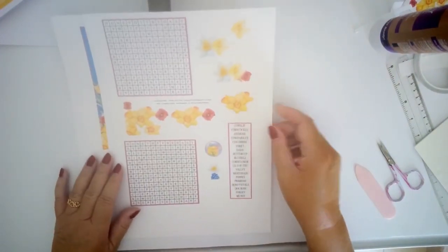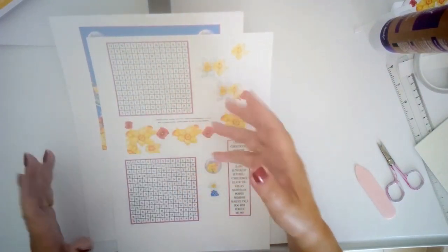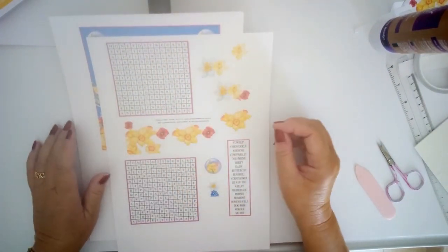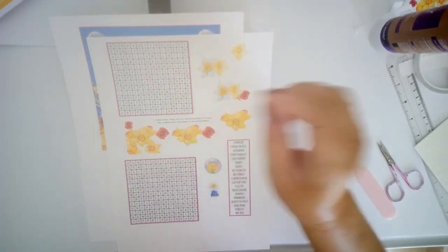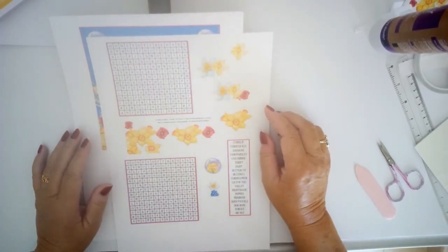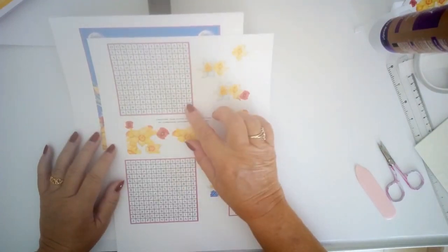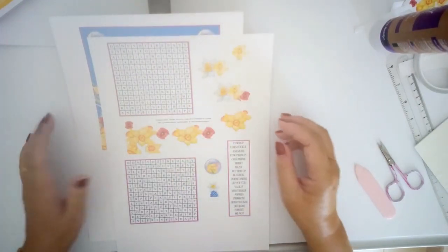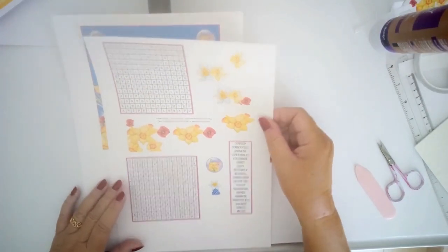Inside on the second page we've got another copy of the word search because of course people don't want to spoil the front of their card by crossing through the flowers so this is the copy that goes inside. If I'm sending it to a family I usually print out two or three of these extra and tuck them inside so they can all have a go at doing the puzzle. It's fun.